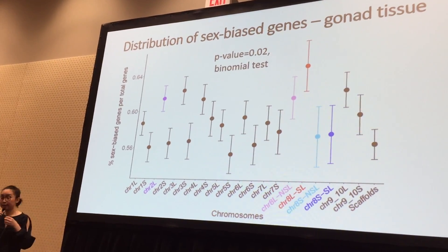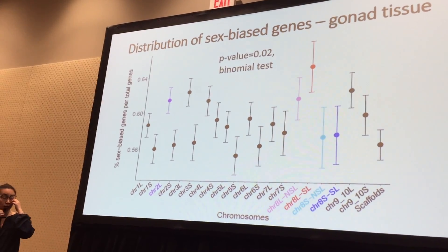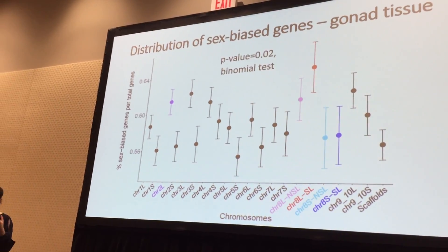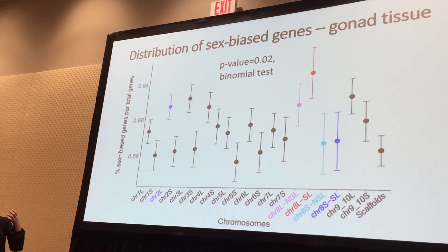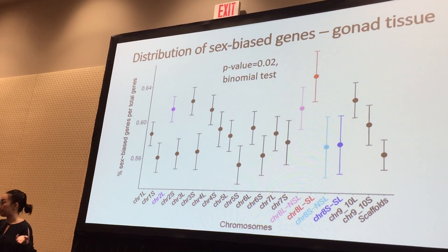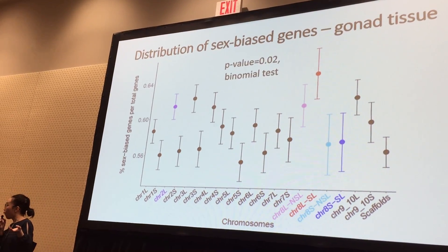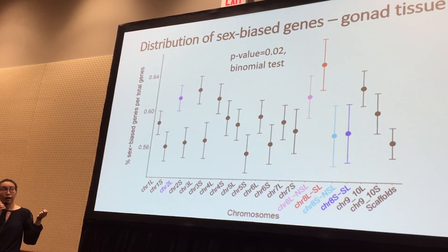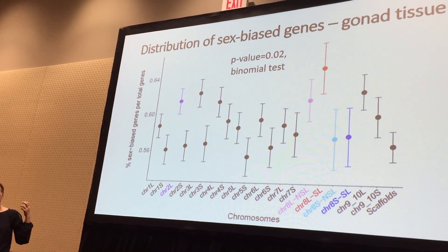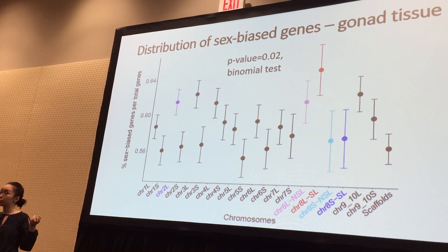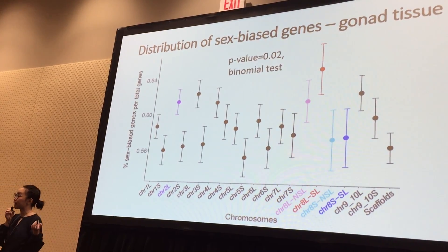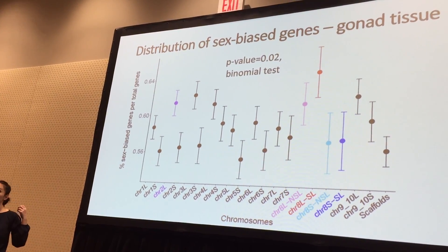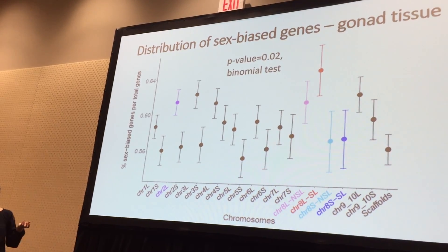Here is the same plot but for the gonad tissues. It shows a slightly different picture but the same overall pattern: the sex-linked region of the sex chromosome has a higher proportion of sex-biased genes compared to the non-sex-linked regions, and it is also higher compared to other autosomes.